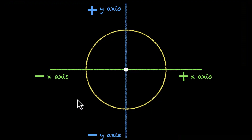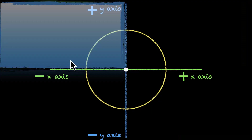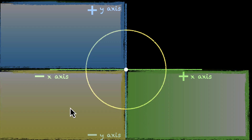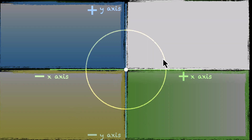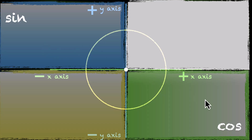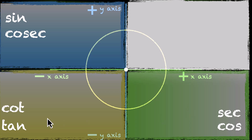Let's summarize. This region is for sine, this for cos, this for tan, and this first quadrant is where all of them are positive — every single ratio is positive. And this also works for their reciprocals: sine, cos, tan, but also cosec, sec, and cot.